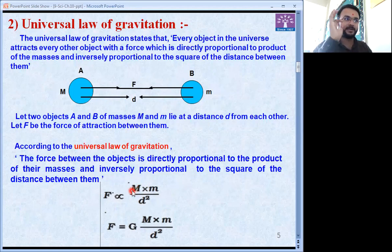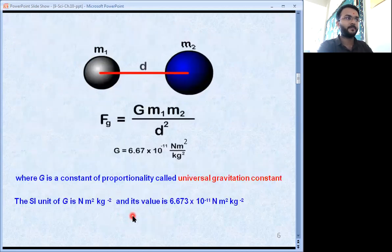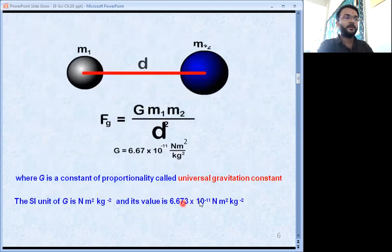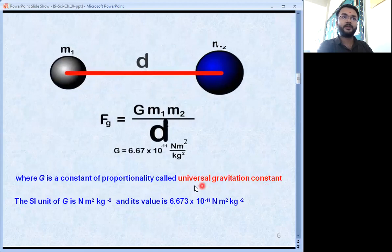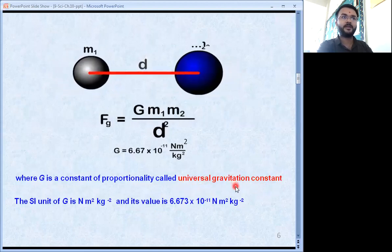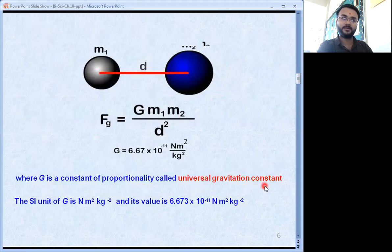Dear students, in chapter 8 you must have studied about the proportionality sign. See, here it is. If we remove proportionality sign, then we must have to put equality sign and one proportionality constant. So here, that proportionality constant is capital G. Dear students, that proportionality constant is named universal gravitation constant. Why? Because its value is fixed.